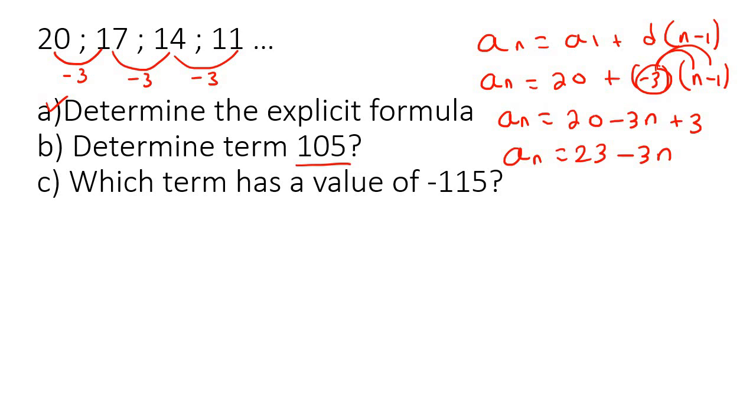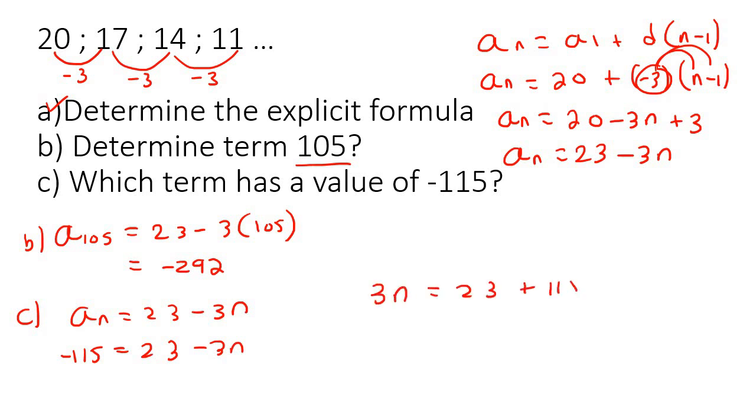For question B, determine term 105. So we're going to plug in n as 105. And so that's going to give us negative 292. So that's question B. For question C, which term has a value of negative 115? So let's quickly go write down our formula. So you're going to put negative 115 over here. So you need to become really good at knowing whether you need to plug the number in at n or whether you need to plug the number in at an. And so minus 3n. I'm going to take the 3n to the left. And I'm going to take the 115 to the right. It will end up becoming a positive. And so you'd end up with 3n is equal to 138. Divide both sides by 3. And you end up with 46.